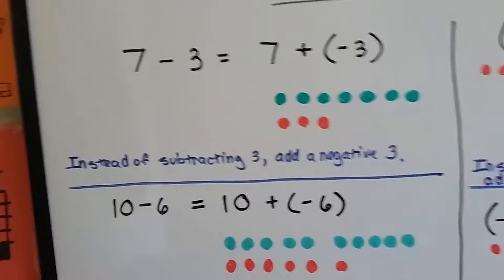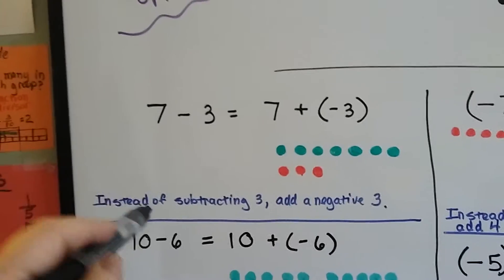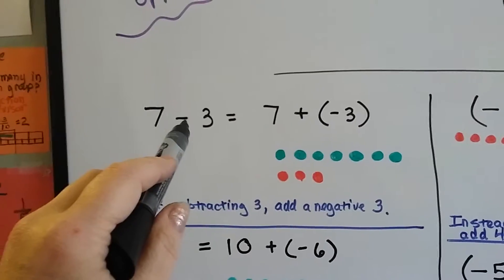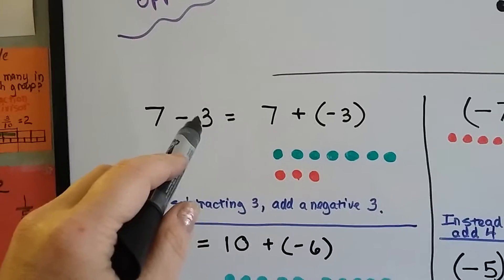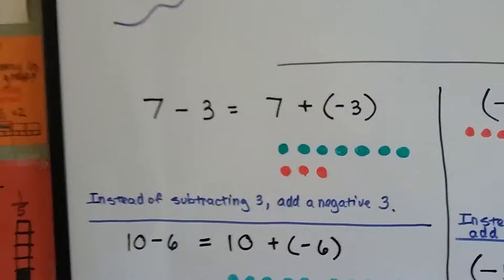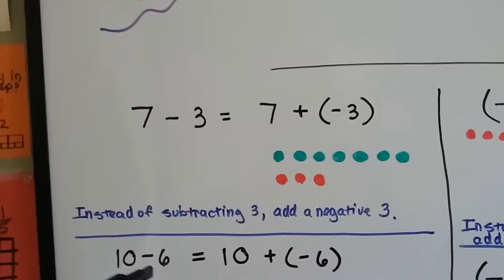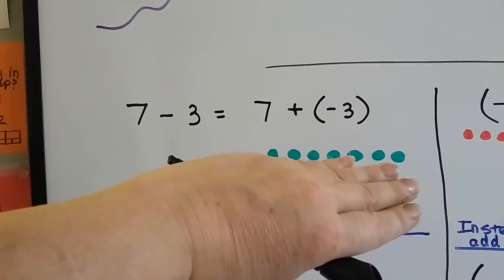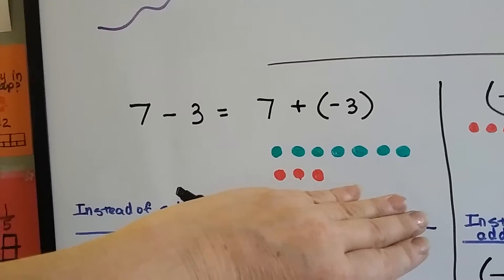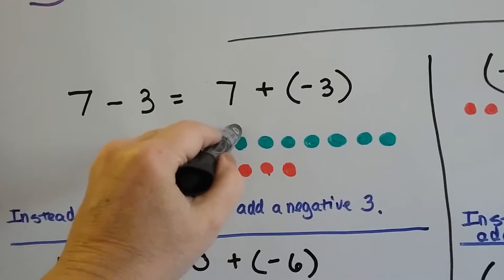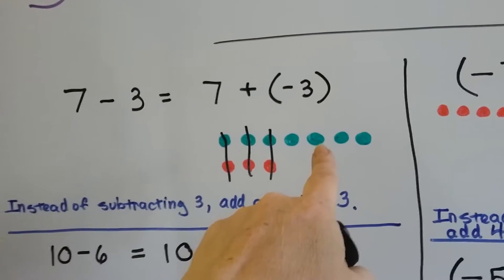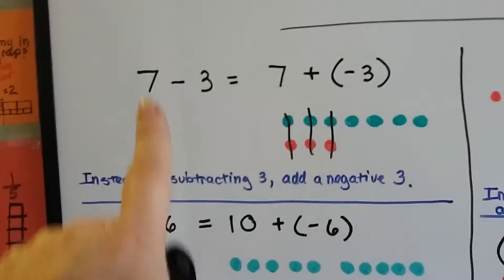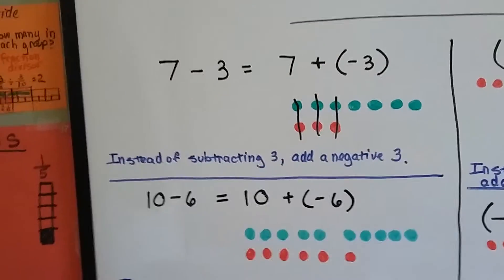Let's look at a simple problem: 7 minus 3. Instead of subtracting the 3, we're going to add a negative 3 — turn the minus sign into a plus, and the positive 3 becomes a negative 3. So we've got 7 plus negative 3. Using chips: 7 green positive chips, add 3 negative ones. They cancel each other out, and we're left with 4 positive. This is teaching you how to add the opposite using very simple equations.